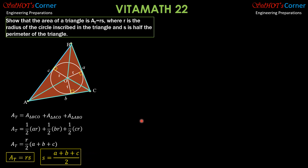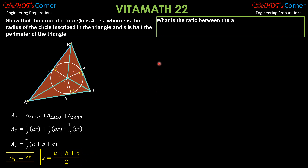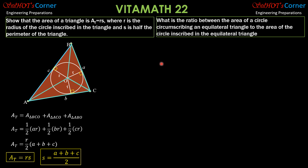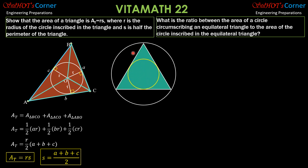That's the first part. For the second part: what is the ratio between the area of the circle circumscribing an equilateral triangle to the area of the circle inscribed in the equilateral triangle? To analyze the situation, let's have an equilateral triangle inscribed in a big circle, and also a circle inscribed in the equilateral triangle. The radius of the circumscribing circle is big R.